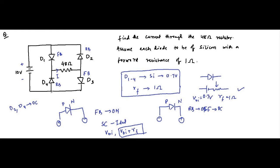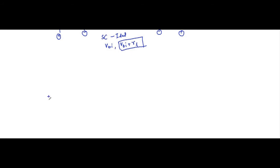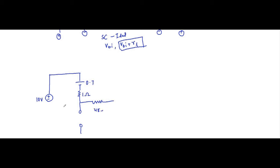The circuit will look something like this — let us redraw it. Starting with minus 10 volt, then we have the built-in potential for diode D1 of 0.7 volt, then the forward resistance of 1 ohm. Here it is open circuited for diode D4. From here we have the 48 ohm resistor connected. Then for diode D3 we have the built-in potential 0.7 volt and forward resistance 1 ohm.